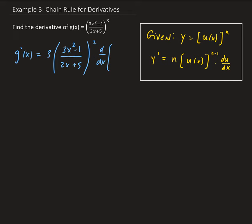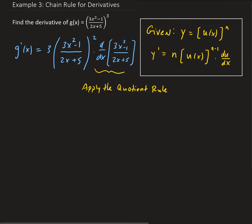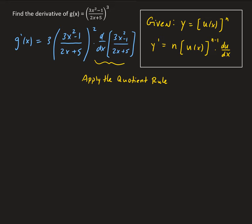And then we need to take the derivative of 3x squared minus 1 over 2x plus 5. So we're going to have to apply the quotient rule here. Let's do that down here first, and then we'll substitute back into the derivative of g. So we have the derivative of 3x squared minus 1 over 2x plus 5.